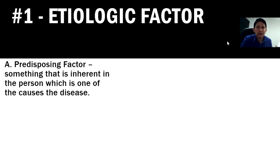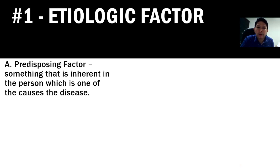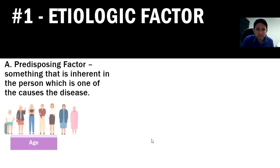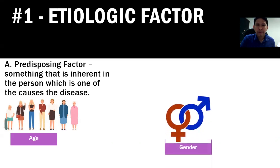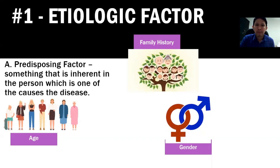Let us discuss the etiologic factor — the cause of the disease. First is the predisposing factor, which pertains to inherent factors in the person. These include age — some diseases are more common in older or younger persons — and gender, since different diseases have different gender predispositions. Males may be predisposed to certain diseases not common in females, and vice versa. Family history is also a predisposing factor; for example, a patient with a family background of hypertension has an increased risk.